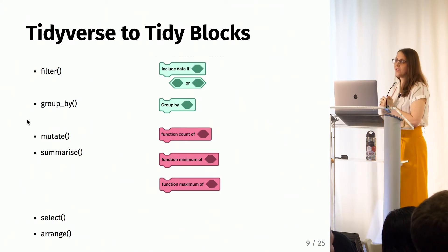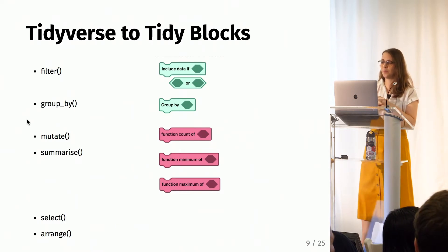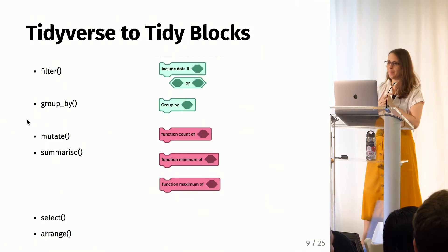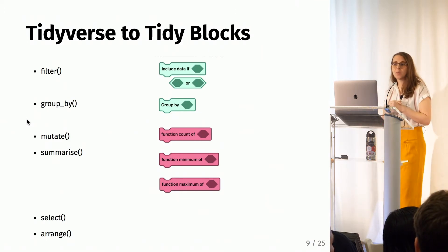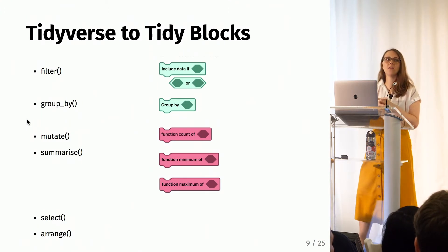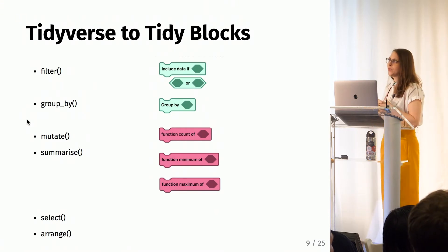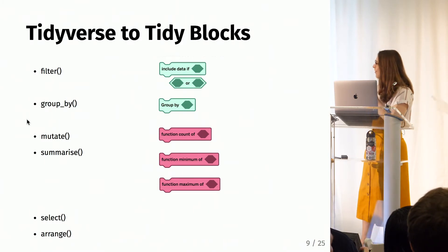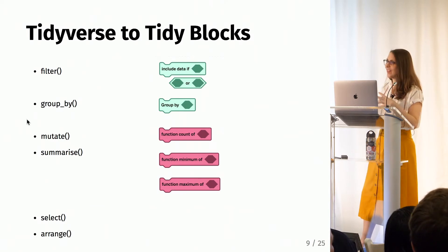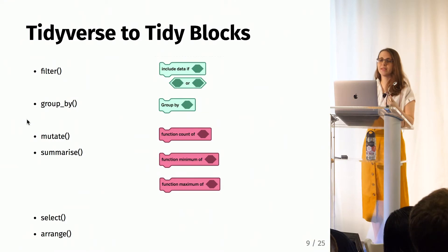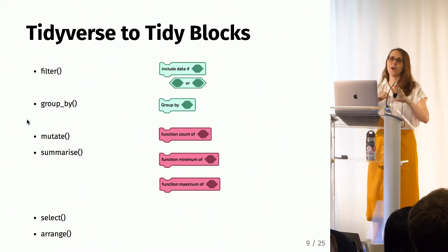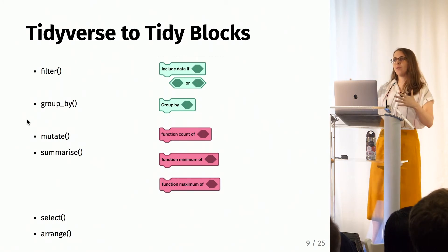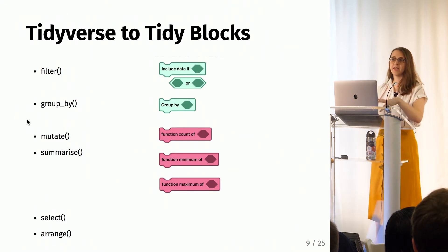Next we have the groupBy block, which at this point works a little differently than the dplyr groupBy — I'll show you in a little bit. We also have mutate and summarize blocks, but these were a bit hard to replicate without getting too clunky, and we didn't really need students to make new variables. So instead we use these function blocks — I think they should be named something like 'calculate,' but that's what they look like now — and they allow us to do aggregation. The last two verbs, select and arrange, we realized we didn't really need since students mainly just use graphs.